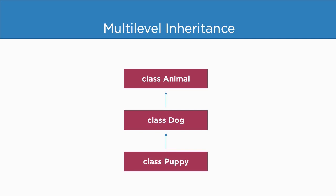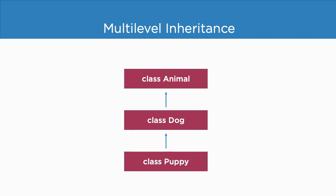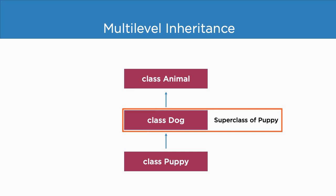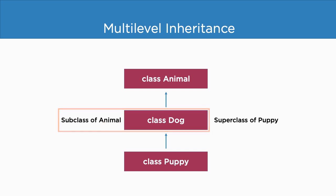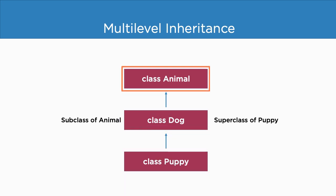Next is multilevel inheritance. In this type of inheritance, a subclass inherits properties from a superclass which is already inheriting properties from another class, so you can see here we have inheritance at multiple levels. Here, class dog is acting as a superclass of class puppy, and at the same time the same class dog is acting as a subclass of class animal. Class animal is the superclass of class dog, and class puppy is the subclass of class dog. If you notice, class puppy is actually indirectly inheriting the properties from class animal. This is what is known as multilevel inheritance.